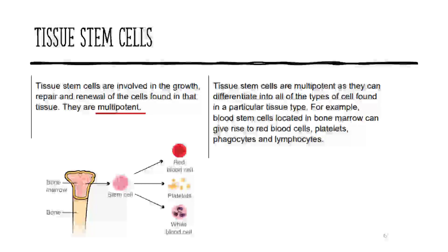Tissue stem cells are limited to specializing into cells found in the same location. A good example is the stem cells found within the bone marrow, which is where all your blood cells are produced: red blood cells, platelets, phagocytes, and lymphocytes (which are white blood cells). So tissue stem cells can still differentiate into any one of those different blood cells, but they couldn't become a nervous or a muscle cell, for example. Because they have more limited options, they are multipotent.